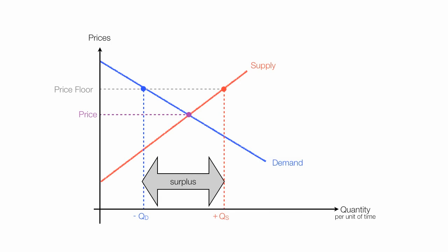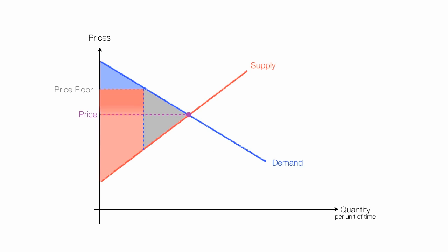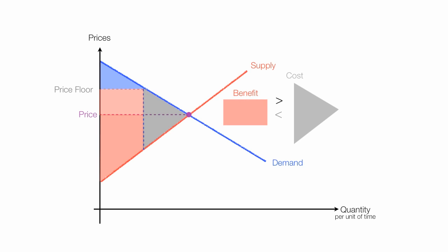Consumer surplus is the area below the demand curve and above price. It was this area, and now it's shrunk to this area. Producer surplus used to be this area, with some deadweight loss we'll discuss in a moment. This area used to belong to consumer surplus and has now been transferred to producer surplus. This large triangle is now deadweight loss to society. To understand the impact to society, I have to compare the area transferred from consumers to producers with deadweight loss, to see if the benefit is greater than, less than, or equal to cost.